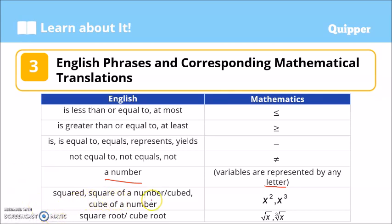We also have 'squared' or 'square of a number,' which is represented by a variable with exponent 2. 'Cubed' or 'cube of a number' uses exponent 3. 'To the fourth power' uses exponent 4. For roots, 'square root of a number' is written as the square root of x, and 'cube root of a number' is written as the cube root of x. Remember, the variable doesn't have to be x — any letter can be used.